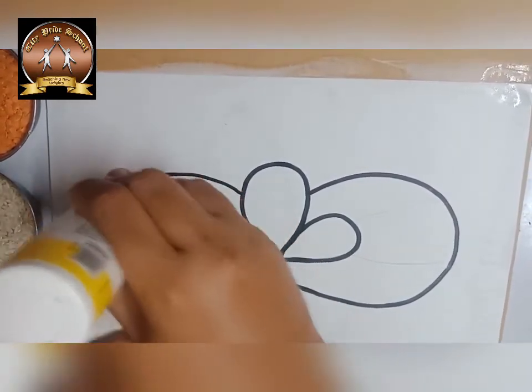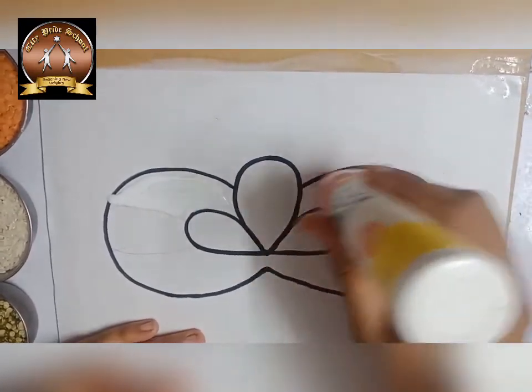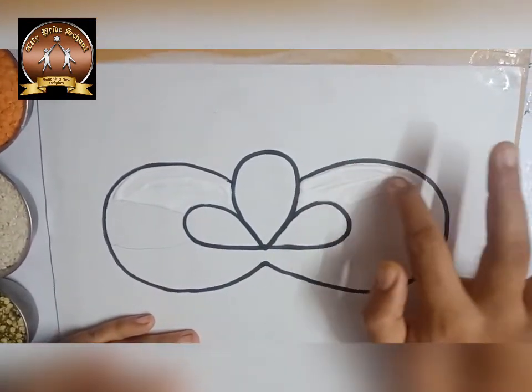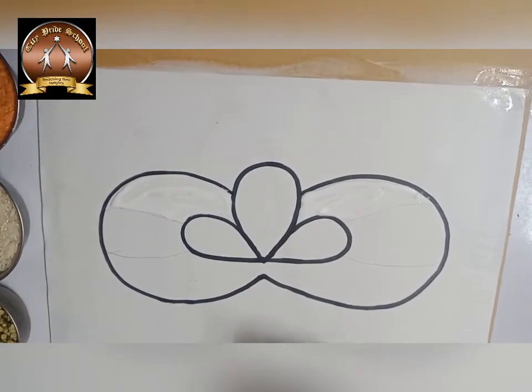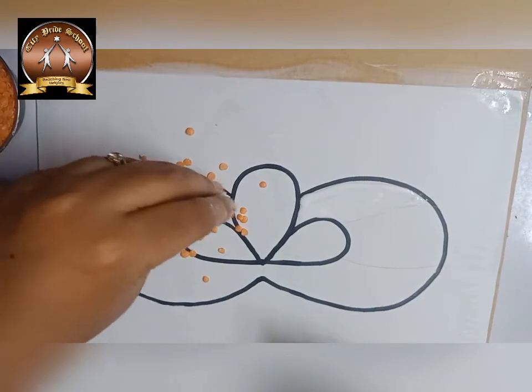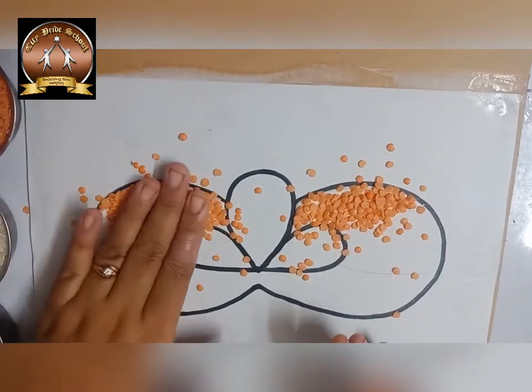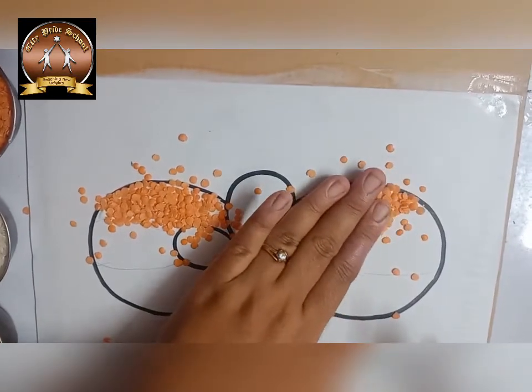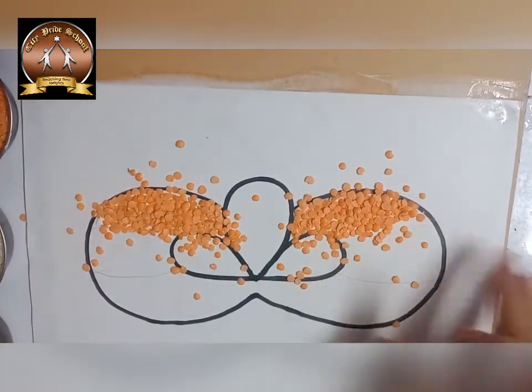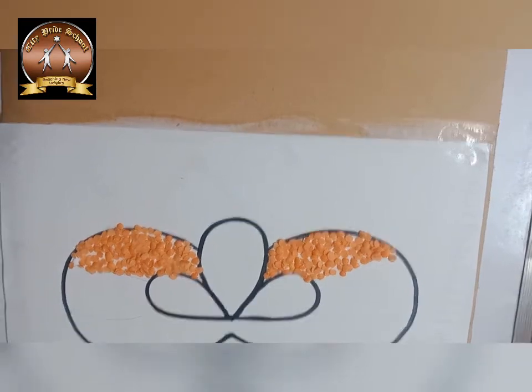I will apply the glue where I want to stick these pulses. Not for all parts. Where I want to paste the orange color dal, there only I will first apply the glue. Otherwise, that favicol will get dry. Then, slowly, I will put the pulses where I have applied the glue. You have to press it. Then it will stick properly. After one minute, whatever extra seeds are there, you can remove them. You have to give some time to stick it. Then we will go to the next part.